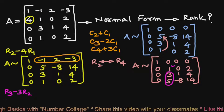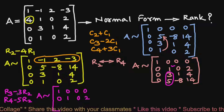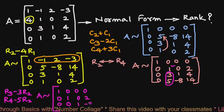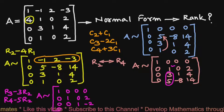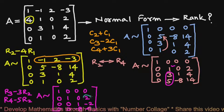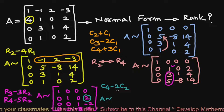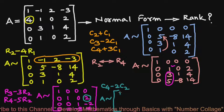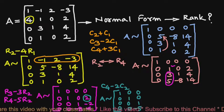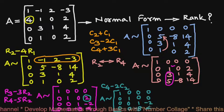By row transformations R3 minus 3R2 and R4 minus 5R2, we get the equivalent matrix: rows 1 and 2 remain [1,0,0,0] and [0,1,0,2], row 3 becomes [0,0,1,-2], and row 4 becomes [0,0,-8,4]. Then by column transformation C4 minus 2C2, we get the equivalent matrix with first three columns unchanged as [1,0,0,0; 0,1,0,0; 0,0,1,-2; 0,0,-8,0].